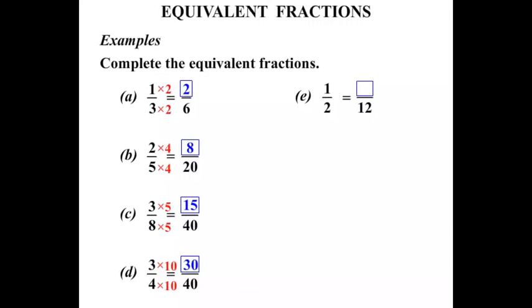The next one, 1 half equals something over 12. Well, the denominator is 2. We've turned it into a 12 by multiplying by 6. So if we multiply the bottom by 6, let's multiply the top by 6, the numerator. And 1 times 6 is 6.